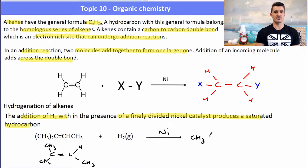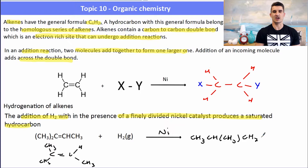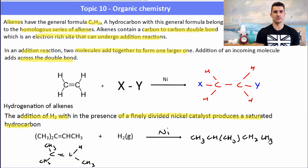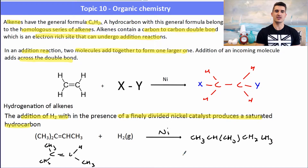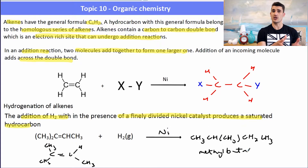I've drawn out the structure showing the double bond. The double bond breaks and a hydrogen is inserted on each side, converting the alkene to an alkane. The product has one branch coming off the second carbon, giving us a molecule called methylbutane. No number is needed because the methyl group can only be on the second carbon.